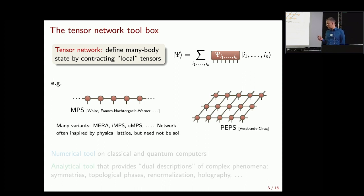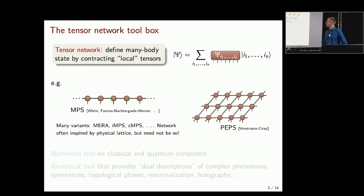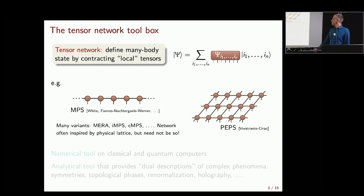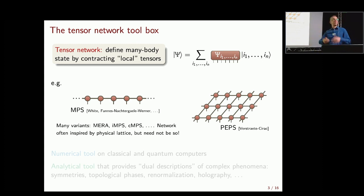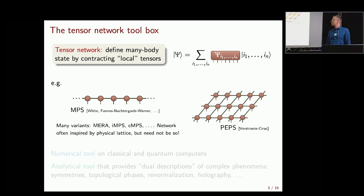A tensor network is a way of defining many-body quantum states by contracting a network — a graph or web — of local tensors. There are many known families: matrix product states (MPS) are an ansatz for states away from a phase transition in one dimension, with little three-tensors placed on a line. Projected entangled pair states (PEPS), proposed by Frank Verstraete and Ignacio Cirac, are the two-dimensional analog of MPS. MERA is a two-dimensional network describing a one-dimensional state, and iPEPS was also mentioned.